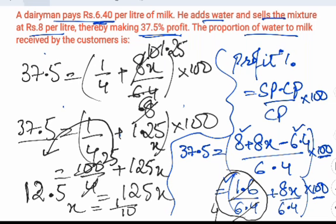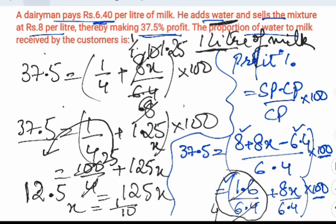So what was x? x was the amount of water which he has added into the 1 liter of milk. So initially we assumed that the milk is 1 liter and x is the amount of water. So x is equal to 1 by 10.